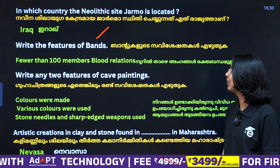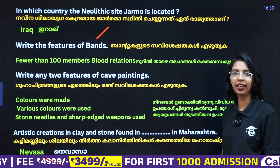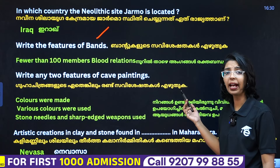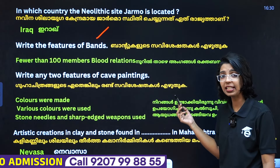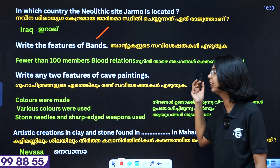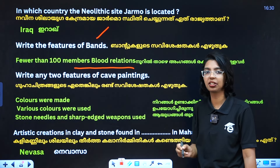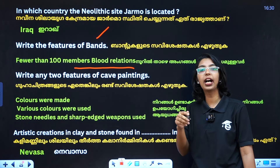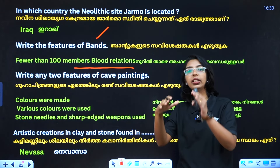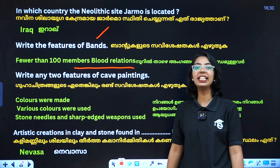Write the features of bands. Bands are used to document features from the Paleolithic period. Fewer than 100 members are related by kin relations — that is the relation. Bled relations is not 100 people. That is why we call it a band.